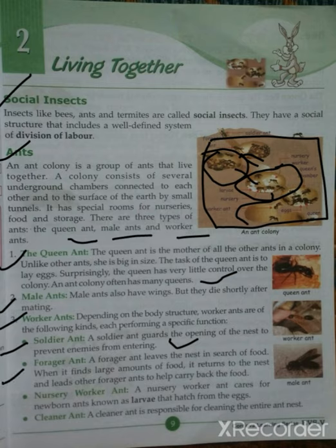The second kind of worker ant is the forager ant. The forager ant leaves the nest in search of food. When it finds a large amount of food, it returns to the nest and leads other forager ants to help carry the food back. They go outside the nest to search for food and, once found, return to give the message to other forager ants.